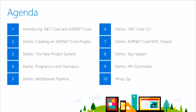Our agenda: we'll start by giving a quick introduction to .NET Core and ASP.NET Core. Then we'll jump into demos - creating a project using Visual Studio 2017, looking at the new CS Proj system, and looking at the underpinnings of an ASP.NET Core application: Program.cs and Startup.cs. Before moving on to the middleware pipeline, a little .NET Core CLI, then we'll create an MVC project. Time permitting, we'll look at tag helpers and API controllers.